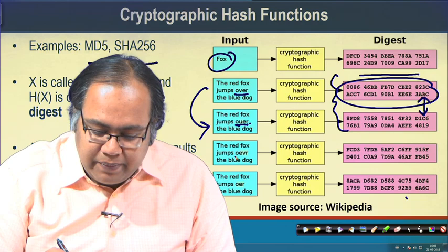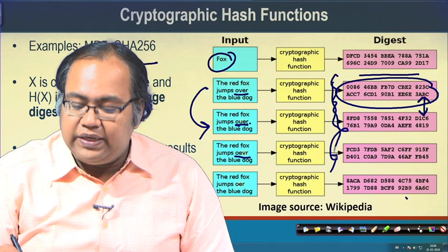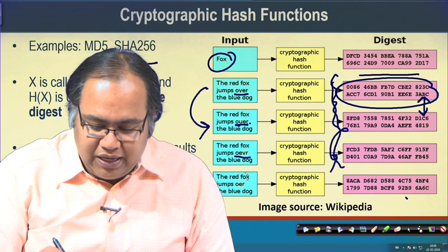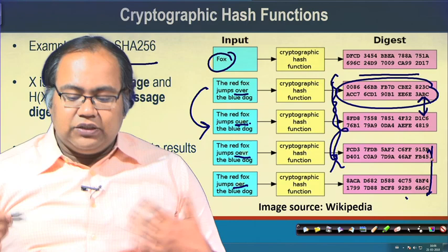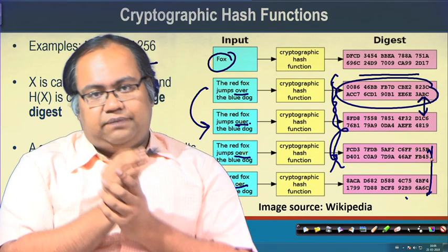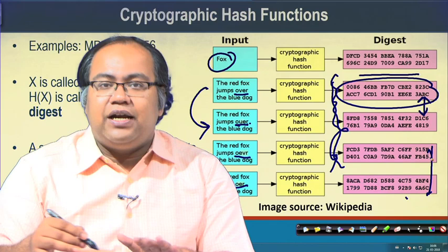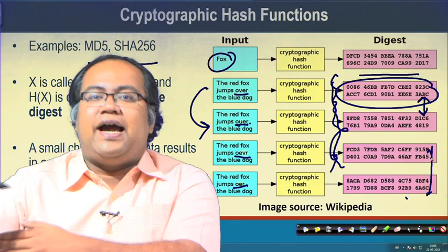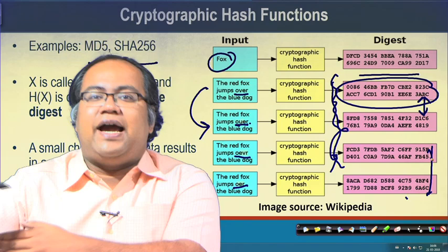Then changing 'OUER' again yields a completely different message digest. By looking at these message digests you will not be able to say that the original input text was the same. This particular effect in cryptographically secured hash functions is known as the avalanche effect. The avalanche effect ensures that just by looking at the digest it is nearly impossible to guess what the input was, or even to guess whether two inputs were similar just by looking at whether two digests are similar. That is an important aspect for the blockchain context.